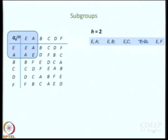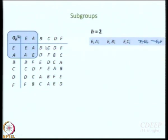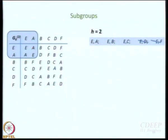What about E,F? Look at F*F — F*F is D, so that is also gone. What about C? C*C is E, so there is no problem with that. I can write E,C and E,C and that will be a subgroup. What about E,B? B*B is E, so no problem there either.